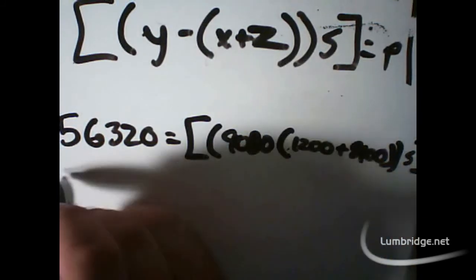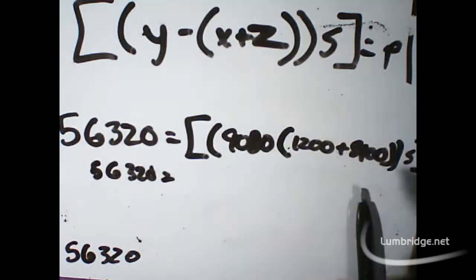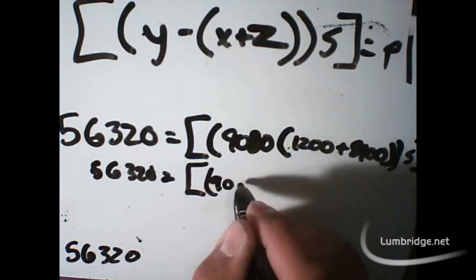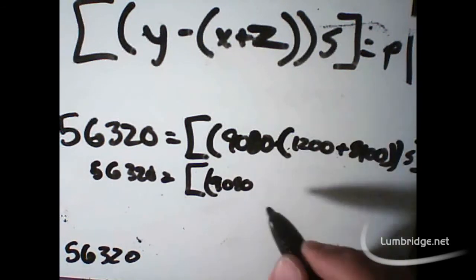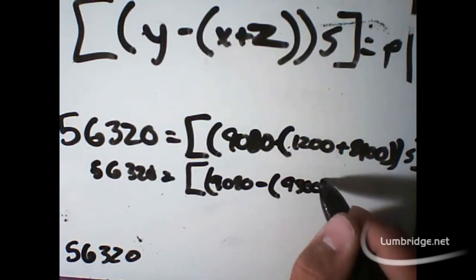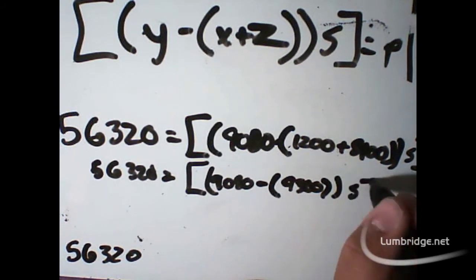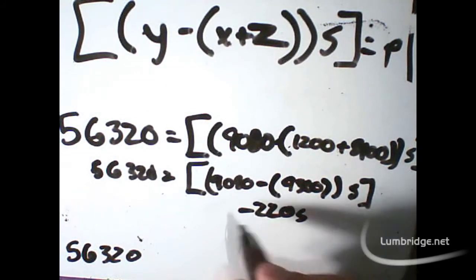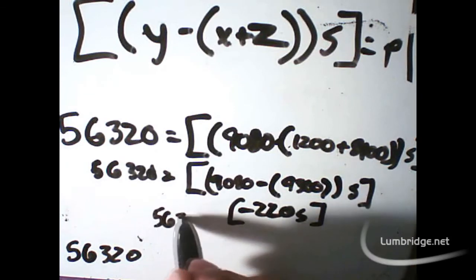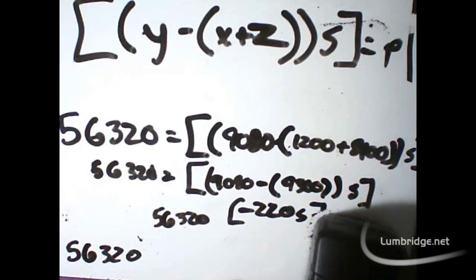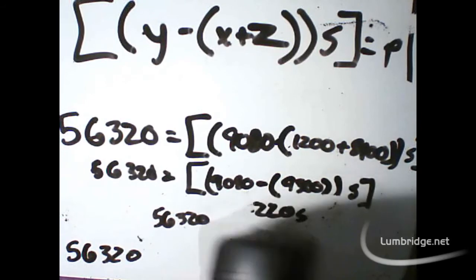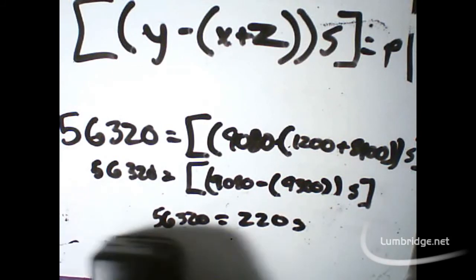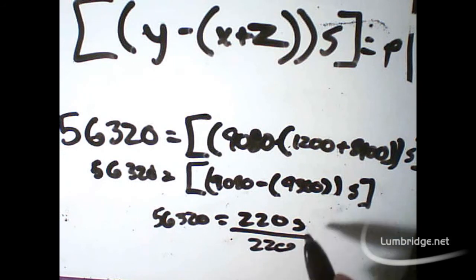So, we're going to make this equation a little bit smaller. 56,320 equals, and we're going to solve in the first bracket first. In this bracket first. 9080 minus, and this turns out to be 9,300 times S. So, this ends up being negative 220 times S. But since the absolute values, the brackets are there, it's just 220 S is equal to 56,320. And since we no longer need this, we're going to get rid of it.